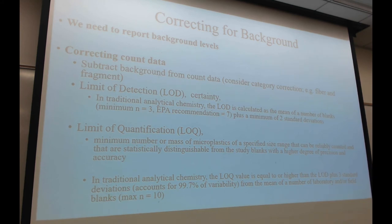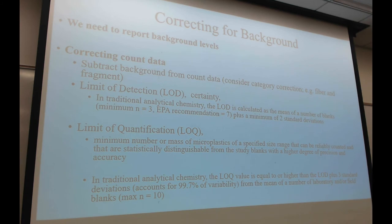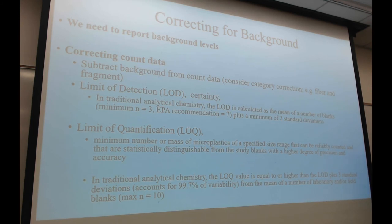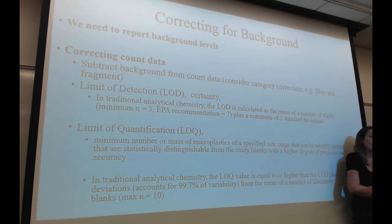With background: how do you deal with it once you have it? The most common approach is to simply subtract that background from your counts, considering specific categories — particles corrected by particle background, fibers corrected by fiber background. We should also consider how confident we are compared to our blanks — it should be statistically different. This relates to the idea of LOD versus LOQ: is that something we need to consider in our reporting, similar to the analytical chemistry field?